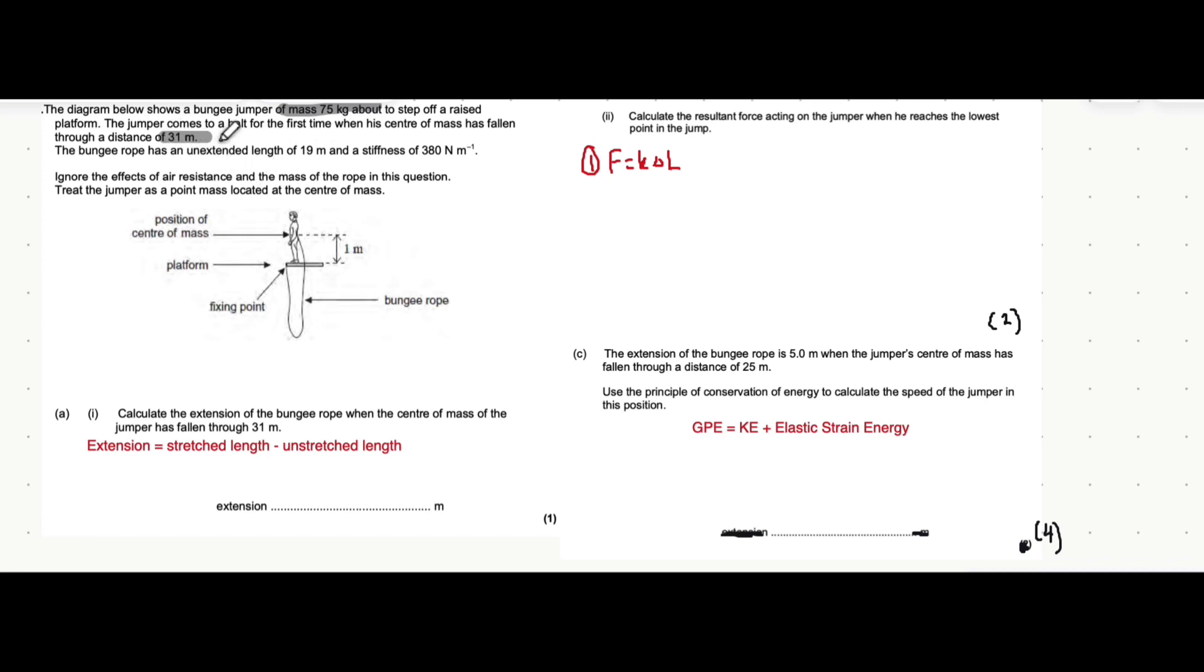They fall through a distance of 31 meters from where they currently are. The unstretched length is 19 meters of this rope, that's the length from here until it's not stretched. The stiffness is given also, this can also be called the spring constant by the way.